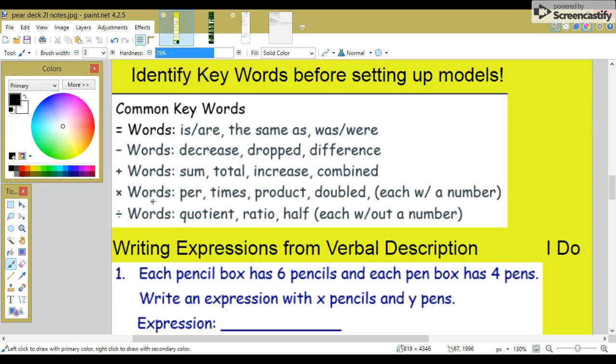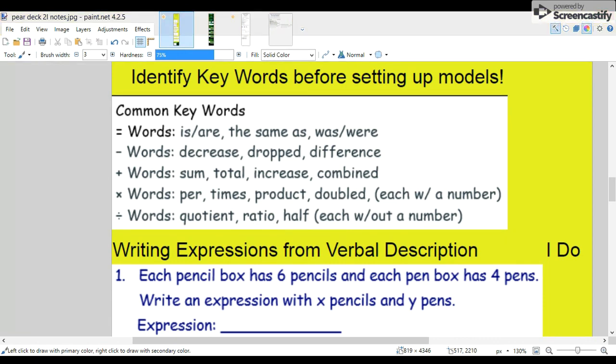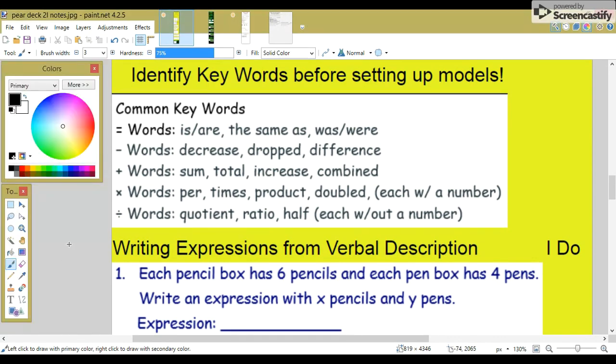Multiplication words: per, times, product, doubled, each with a number. And division words: quotient, ratio, half, each without a number. Of course, there are many other keywords. These are just some of the ones that appear most often.